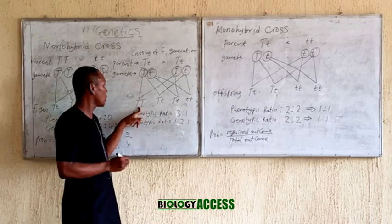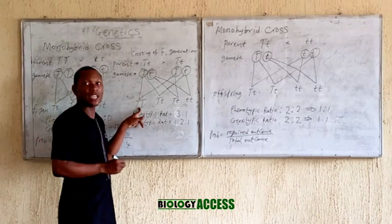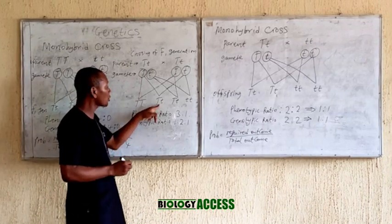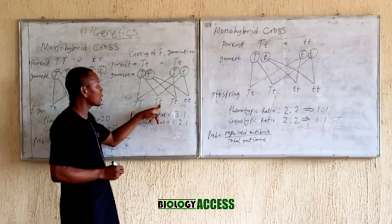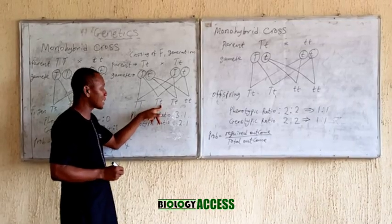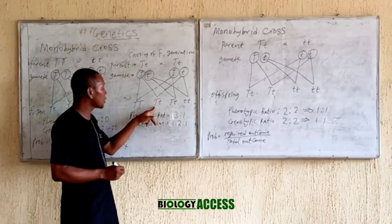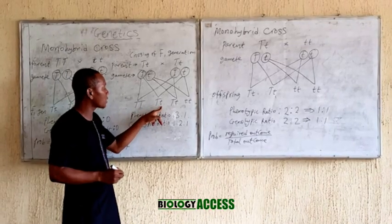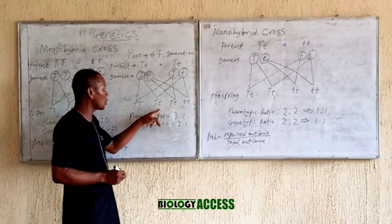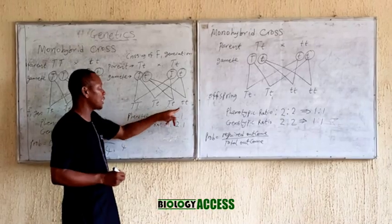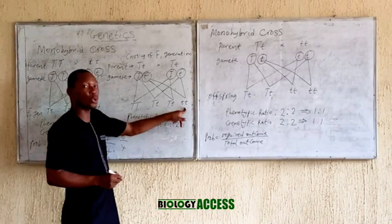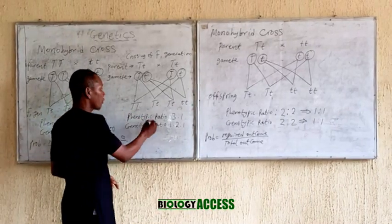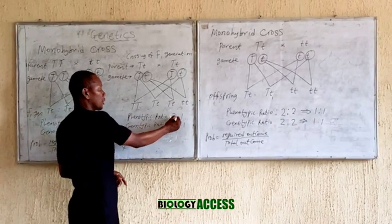In the F2 generation, what is the phenotypic ratio? This first one is tall because both letters are capital T. This second is also tall. This third one has capital T dominating small t, so it is tall. And this last one is short. So we have three tall and one short — a phenotypic ratio of 3:1.